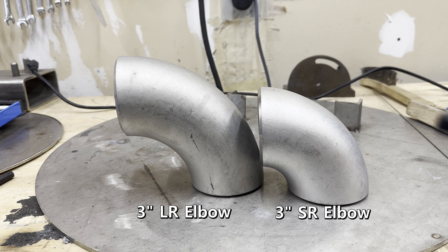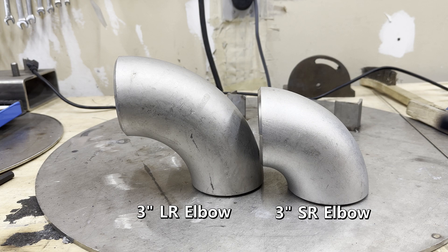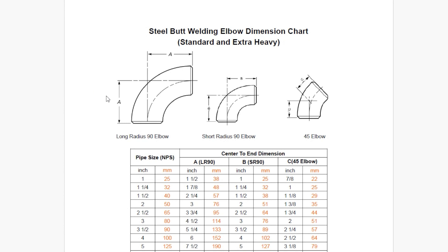The short radius elbow makes a much sharper turn than the long radius elbow. So when do you use this chart? You use this chart when you need to figure out the pipe cut size from a pipe spool drawing. The most important thing on this chart is the center-to-end dimension.